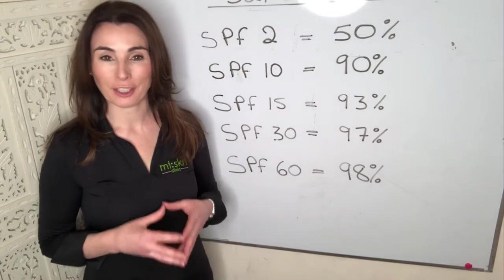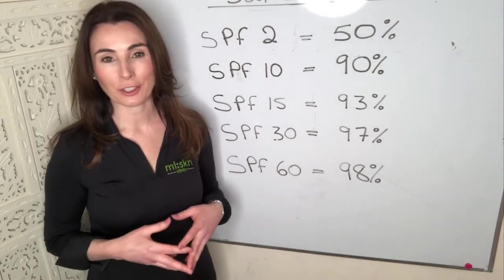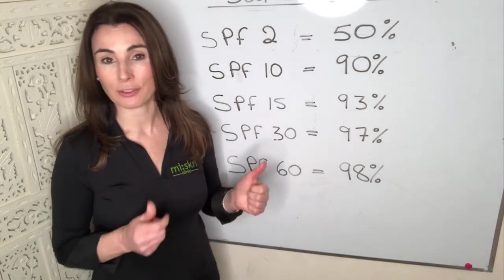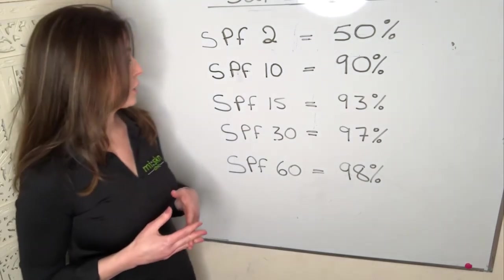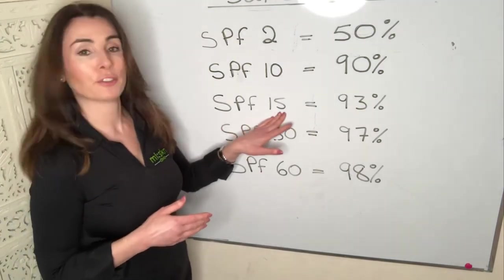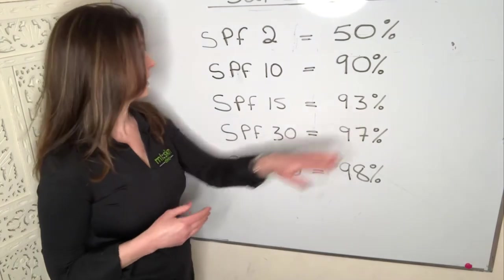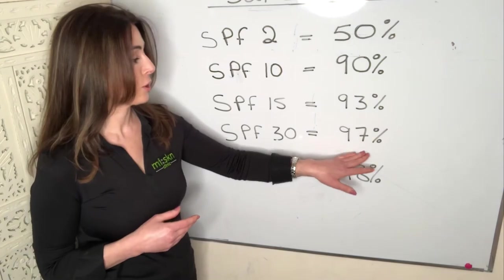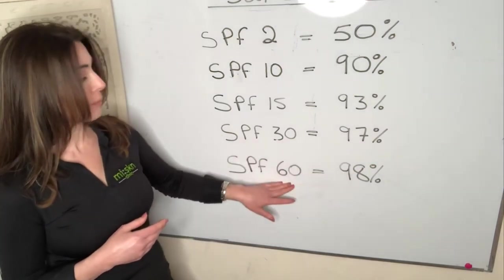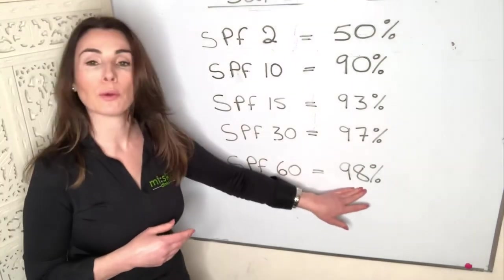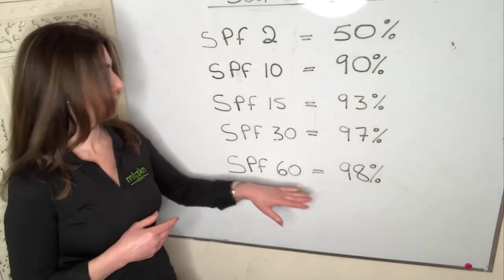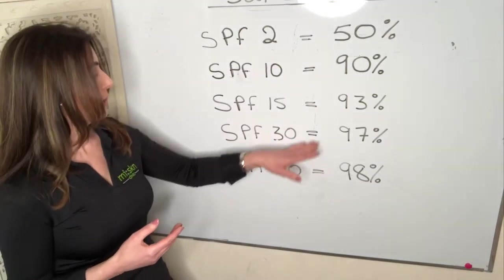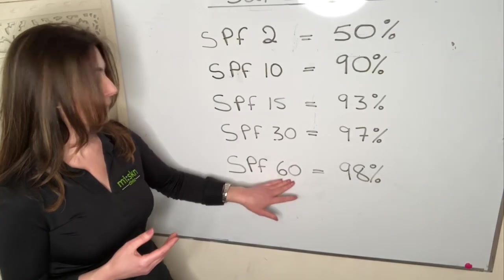When comparing SPF numbers to actual skin protection, this relates only to UVB rays — the rays that burn the skin, not the UVA ageing rays. SPF 15 gives 93% protection; doubling to SPF 30 gives 97%, only 4% more. Doubling again to SPF 60 gives just 98% — only 1% more — yet SPF 60 contains double the chemicals of SPF 30. Therefore, SPF 30 is the better choice.